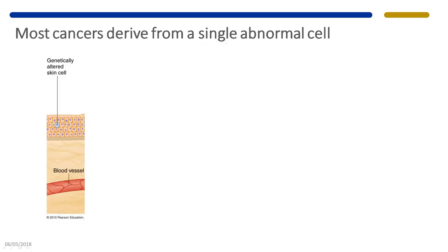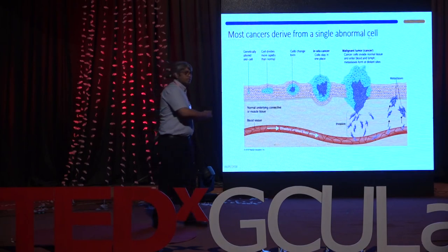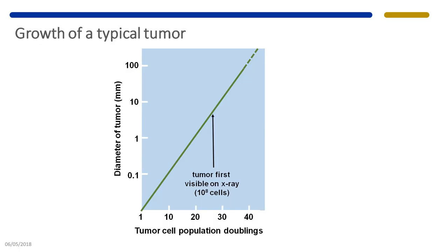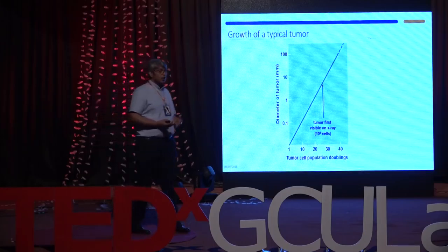This spread is what is actually called cancer. Most cancers develop from a single cell — there is a change in that single cell that enables it to multiply more than normal. Over the years, further changes allow the cell to change its shape and eventually travel to different parts of the body. Cancer doesn't happen overnight; by the time it's detectable on an X-ray, the first tumor already contains 100 million different cells.